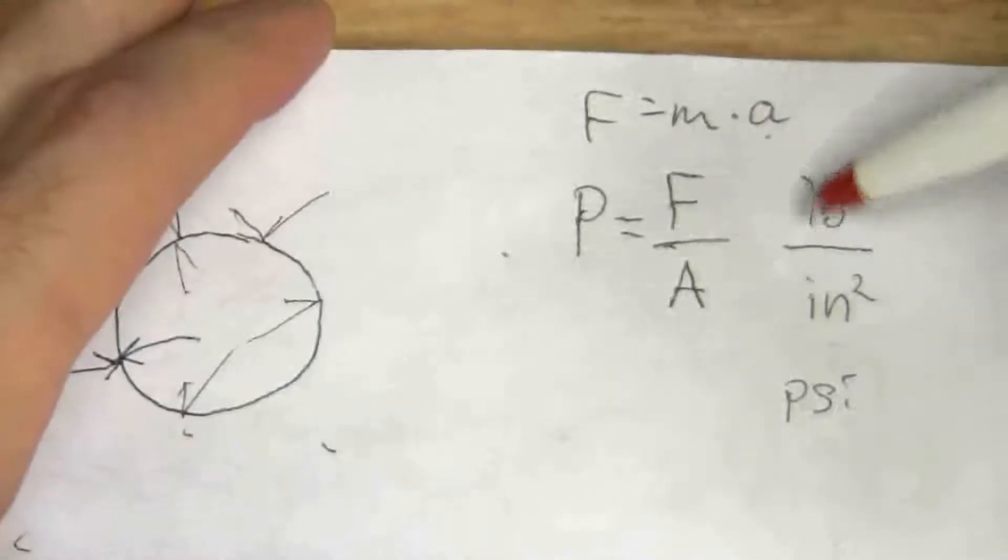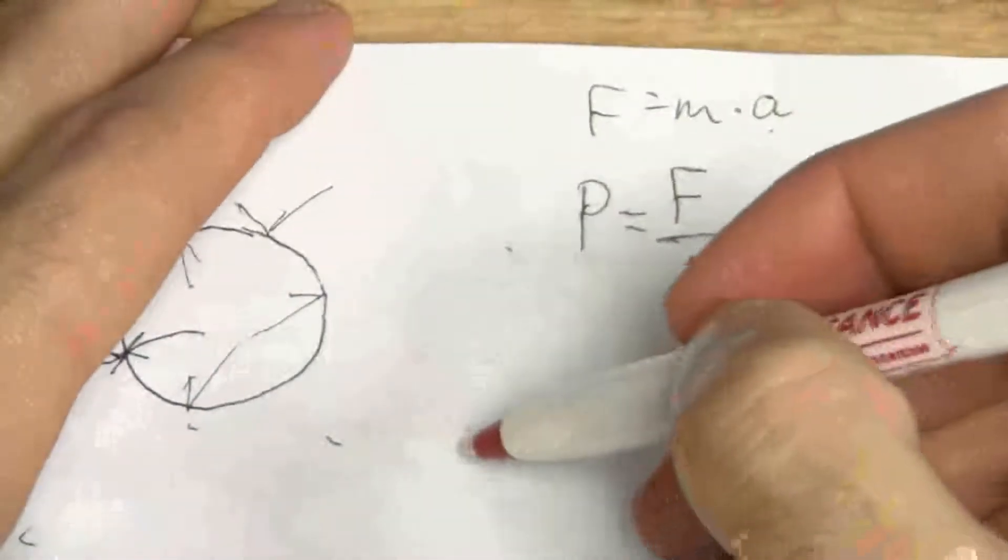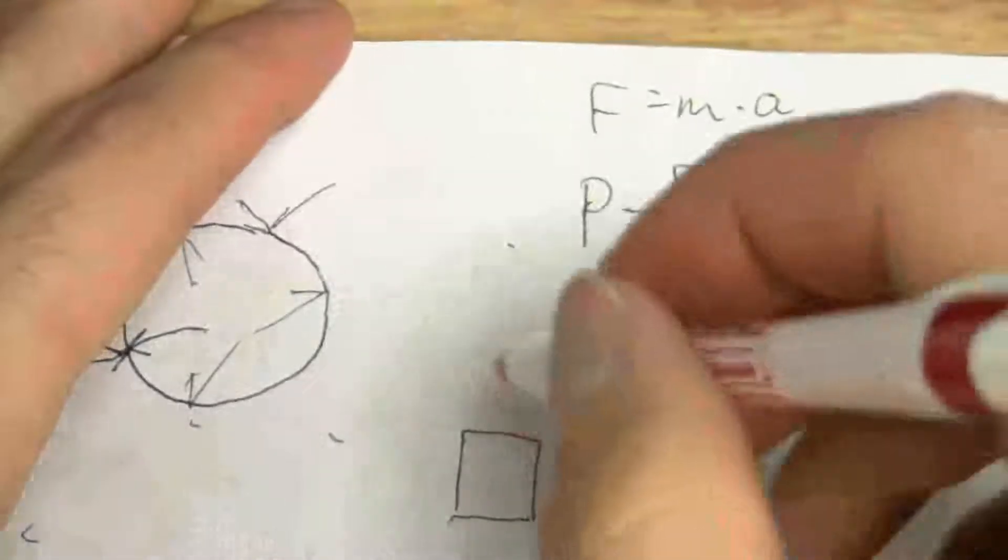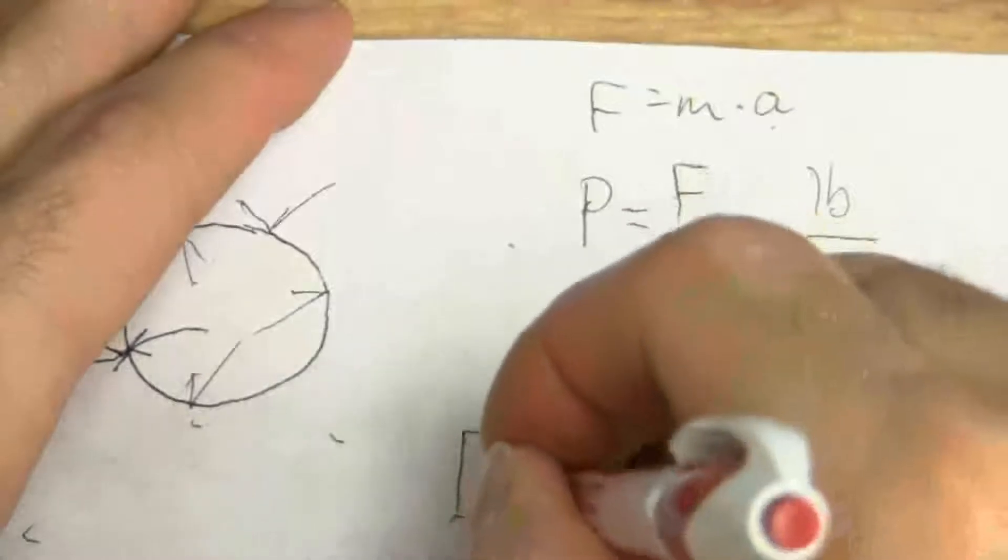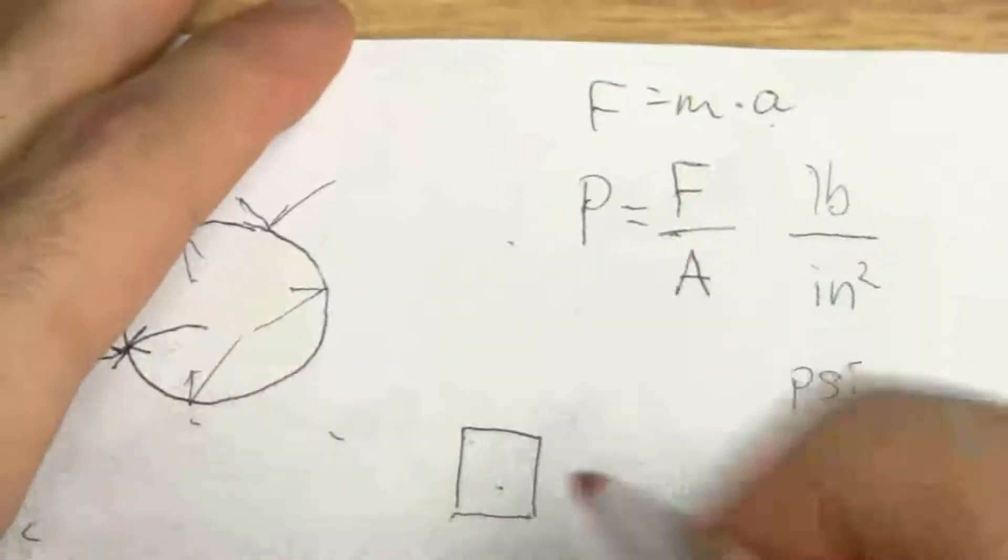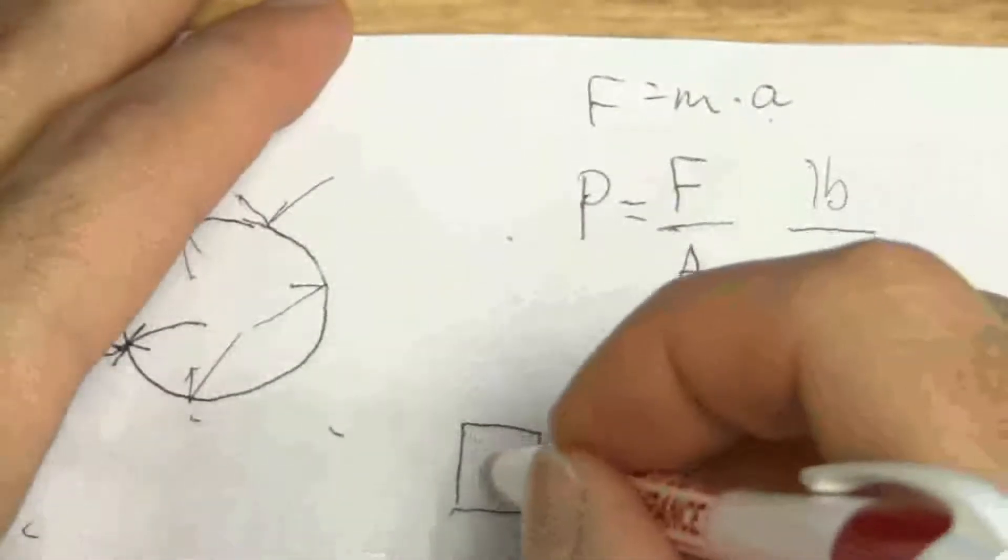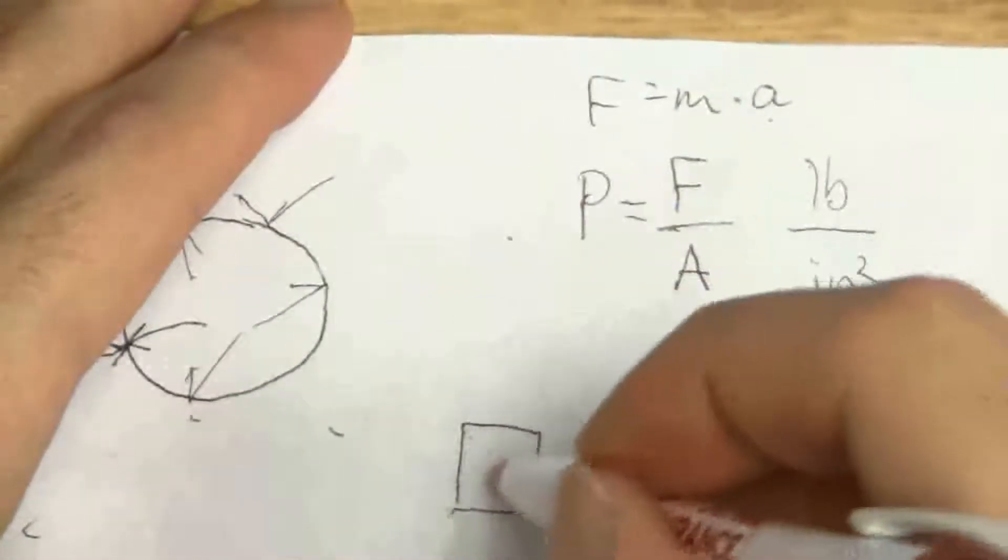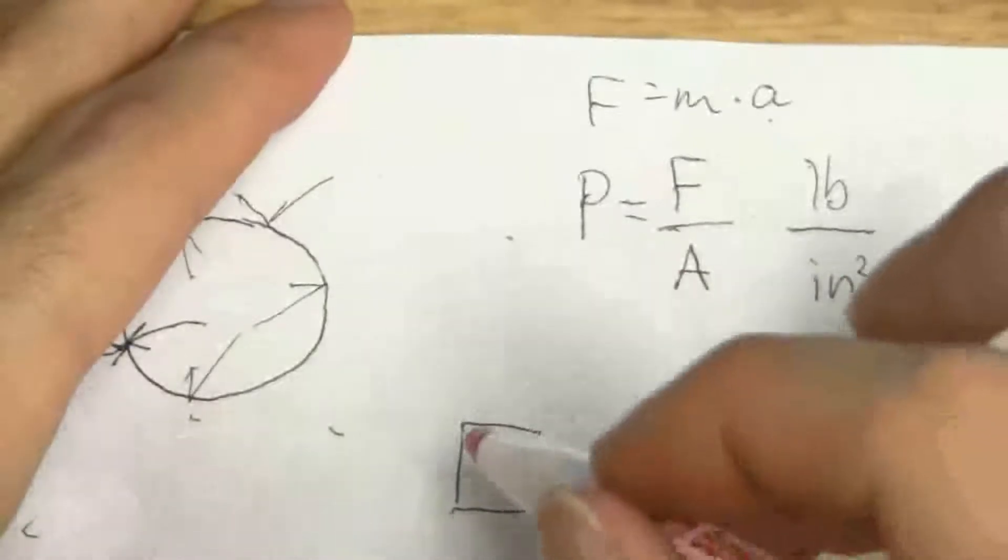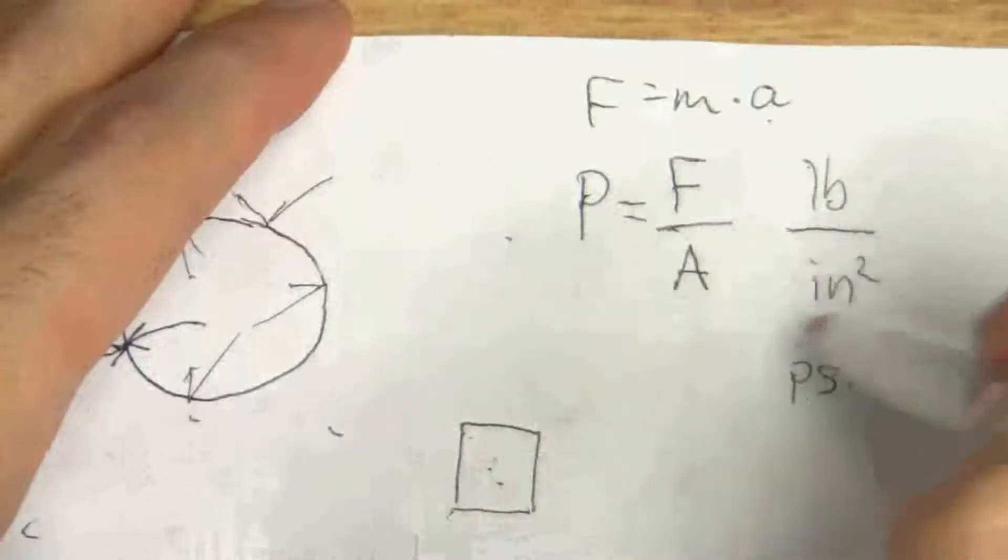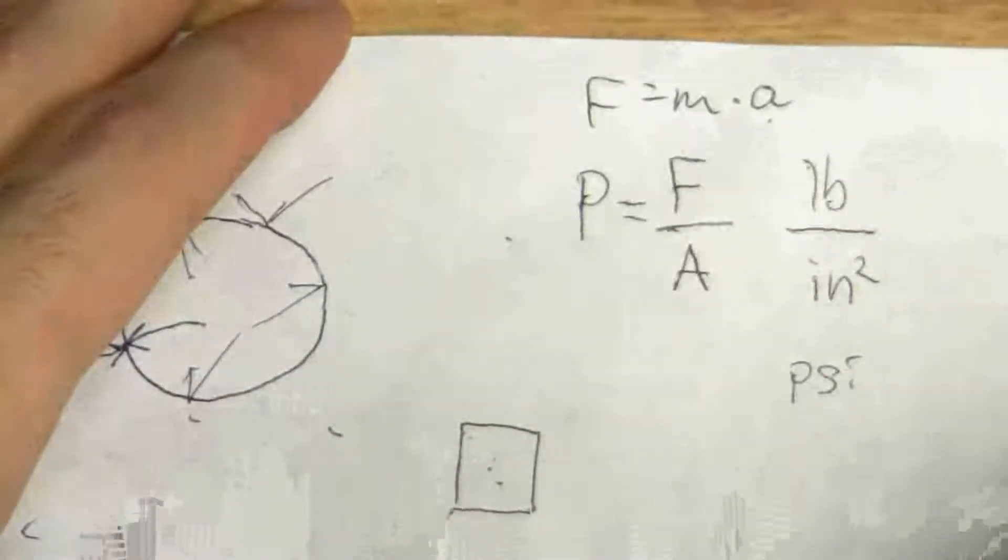But so we have force per unit area per square inch. So that means if say this is my square inch and then I have a certain force pushing on that area. So the molecules, they're bouncing around. When they hit that area, they're going to put a certain amount of force on it. And the force that they put on that given area is the pressure.